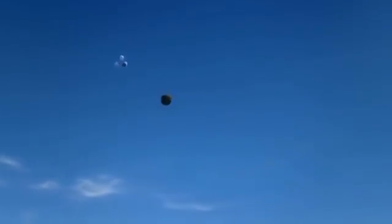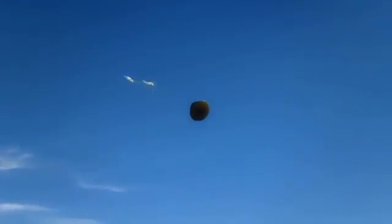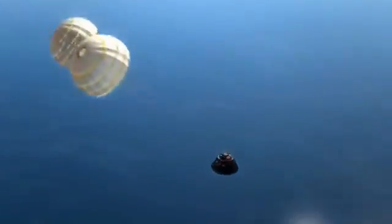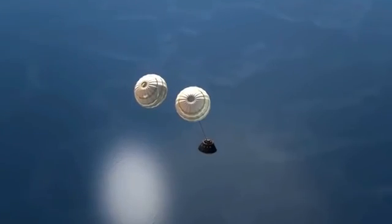The forward bay cover jettisons. Two drogue chutes deploy and slow the returning spacecraft down to 175 miles per hour.